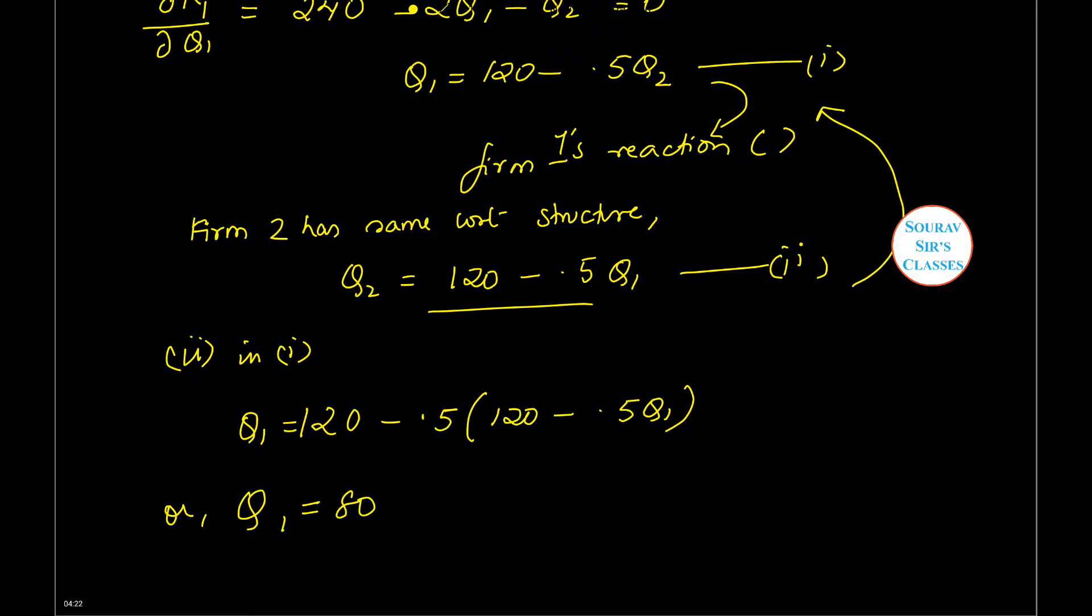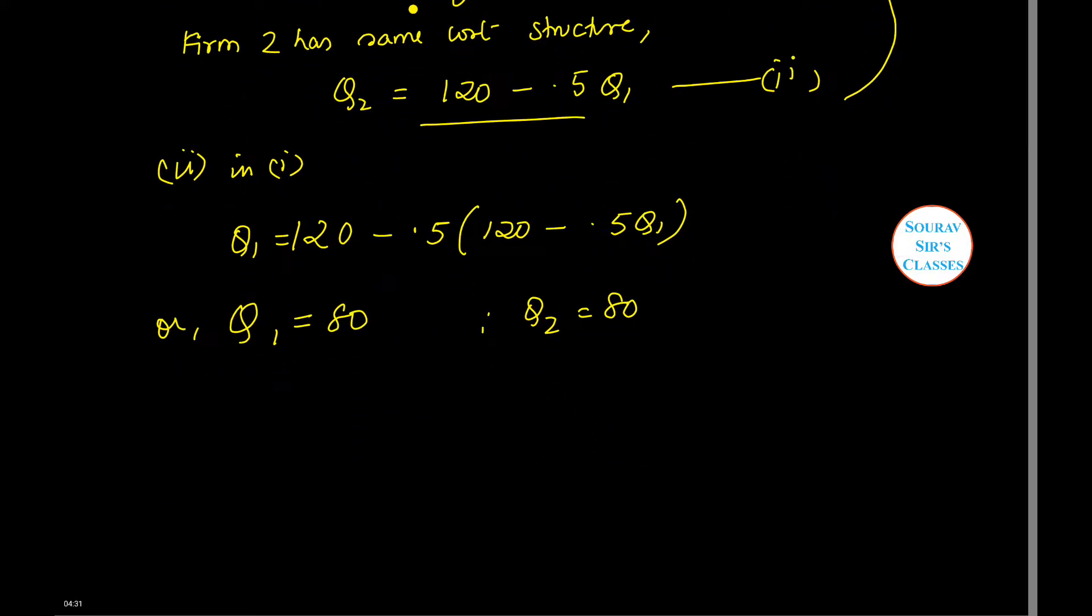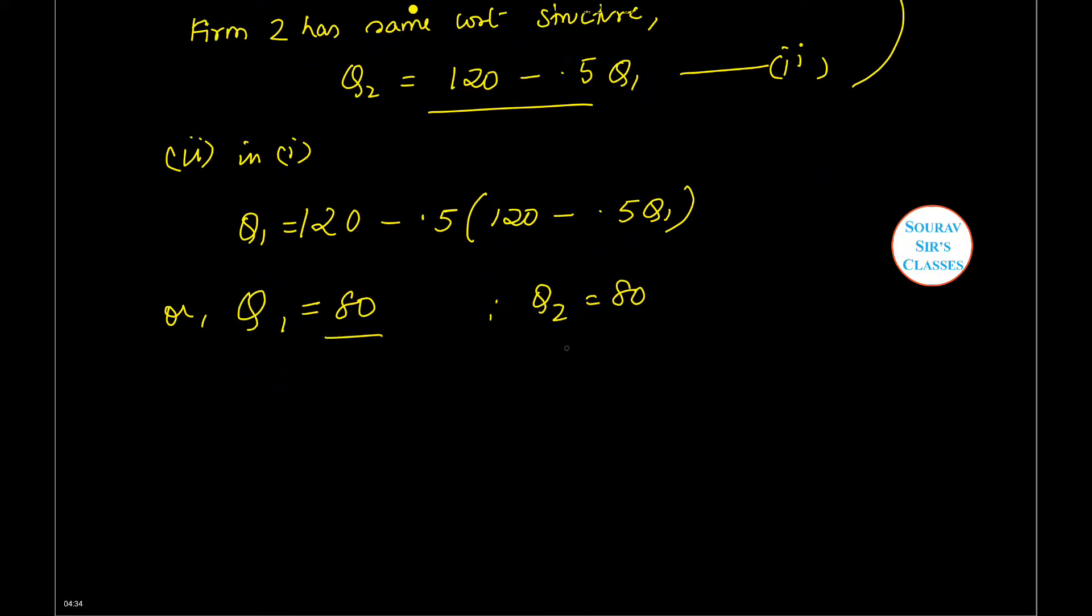So by symmetry, it means that Q2 will also be equal to 80, because they are identical firms.